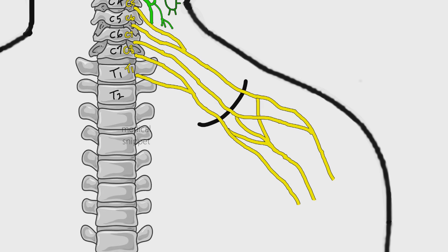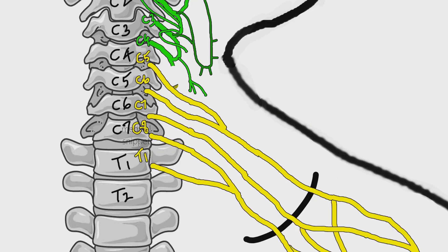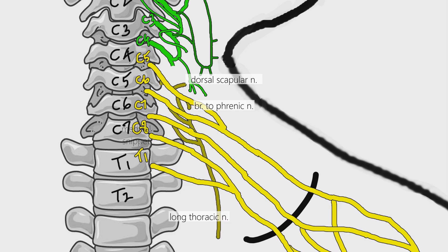Branches of brachial plexus can be divided into supraclavicular and infraclavicular branches. Supraclavicular branches arise from roots and trunks. The branches from the roots are dorsal scapular nerve, a branch to join phrenic nerve, long thoracic nerve, and muscular branches to longus colli and scaleni. The branches from the upper trunk are nerve to subclavius and suprascapular nerve.